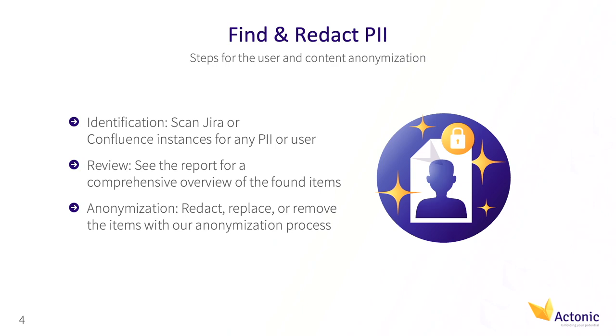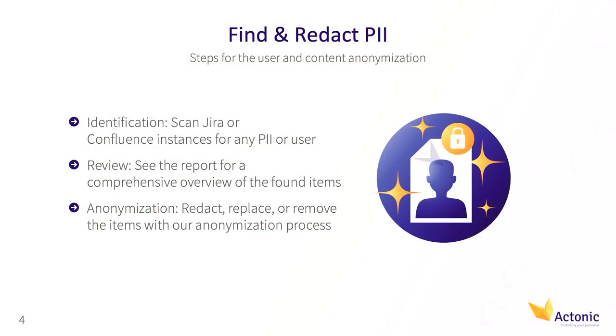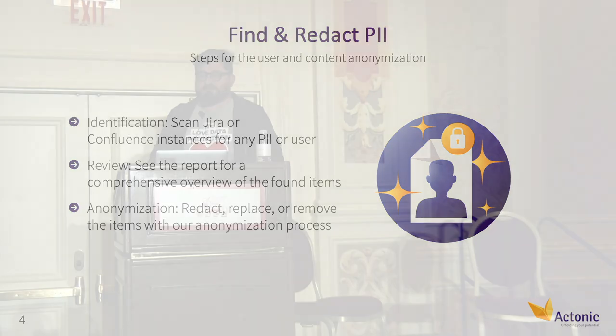Let's go to the next slide, which is a more detailed explanation of the data cleaner part and user anonymization part. There are three steps to anonymize data or a user with our application, though you can skip some steps based on your preference. The first step is identification, where you identify your instance and what kind of PII it holds — for example, user data, usernames, user IDs, credit card numbers, and any other kind of PII.